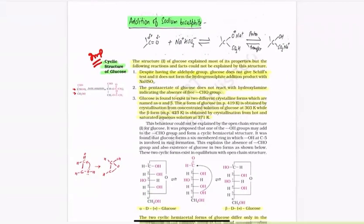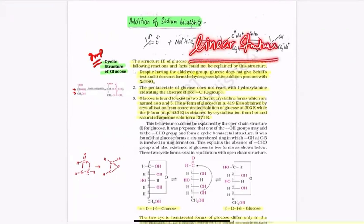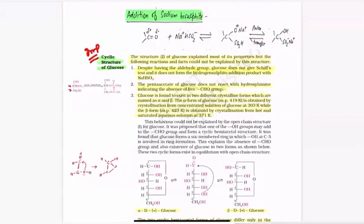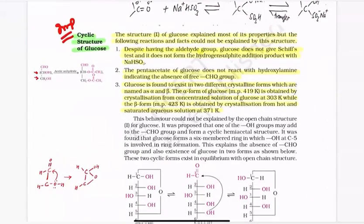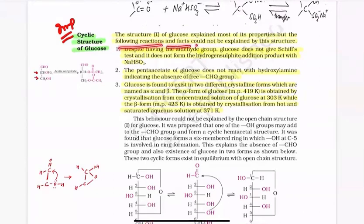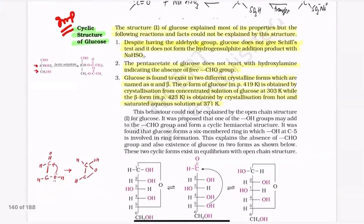Last time we discussed the linear structure of glucose. But in actual, glucose is not present in its linear structure. We are going to discuss the cyclic structure of glucose. The linear structure of glucose explains most of its properties, but the following reactions and facts could not be explained by this structure — the linear structure.